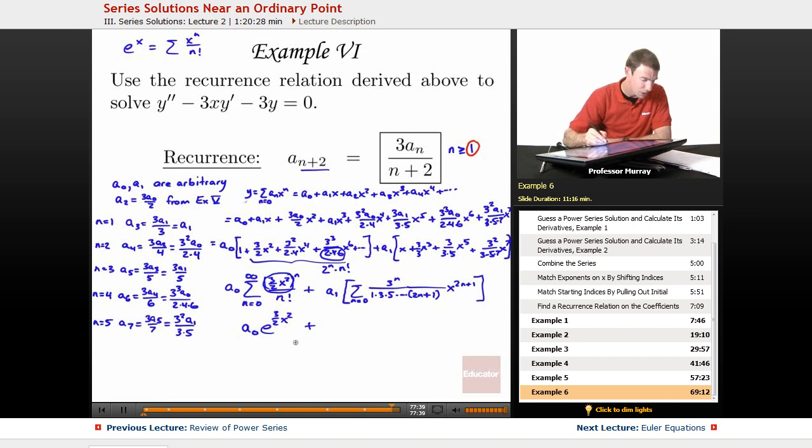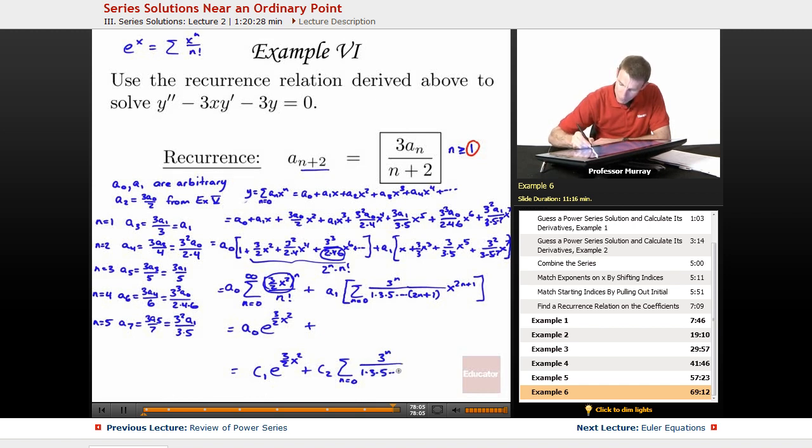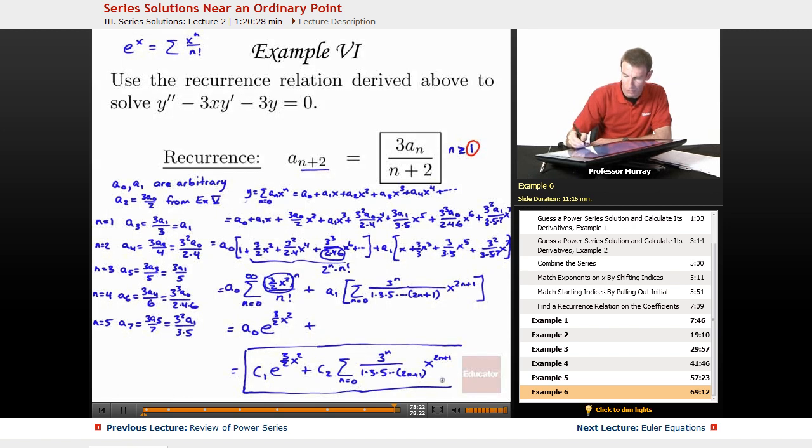So what we have here on the left is A0 times e to the 3 halves x squared. There's nothing really good happening on the right. I'm going to rewrite my two constants as c1 and c2. So c1 e to the 3 halves x squared plus c2 times this series n equals 0 to infinity of 3^n over the odd numbers, 2n plus 1, x to the 2n plus 1. That's our solution for that one.